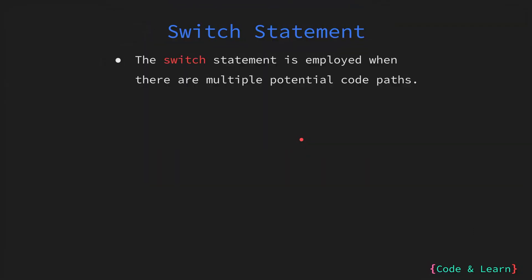The switch statement is a control flow structure used in programming to select one of many code blocks for execution. It is employed when there are multiple possible scenarios or conditions and you want to choose the appropriate code path based on a given condition.